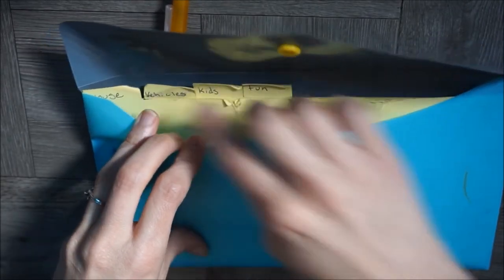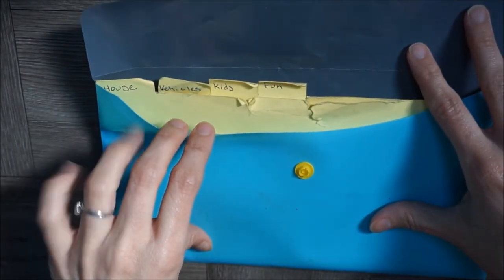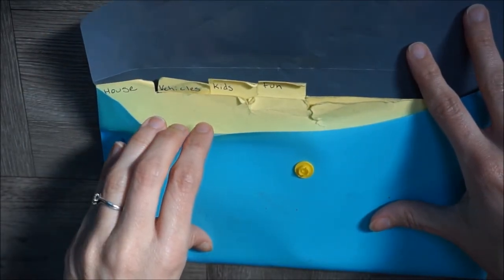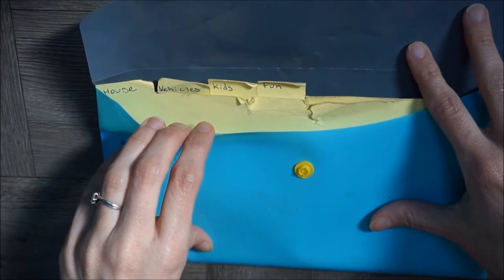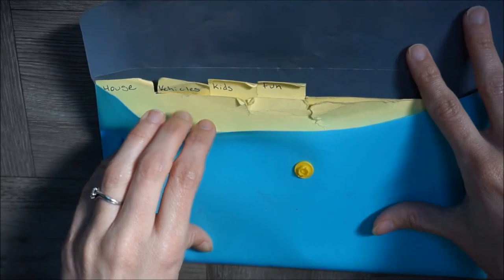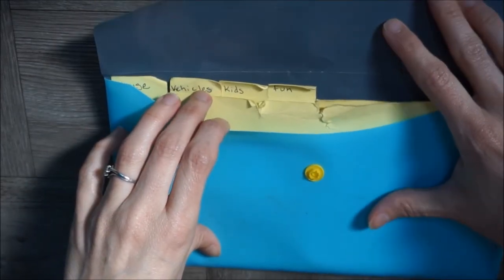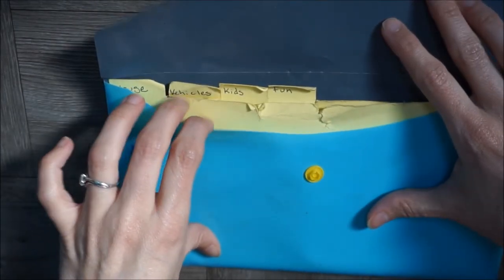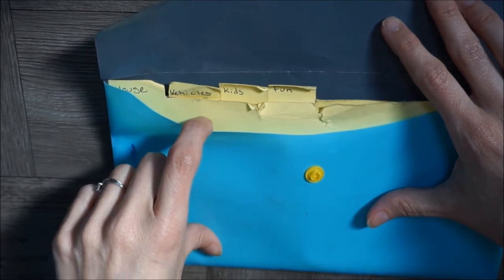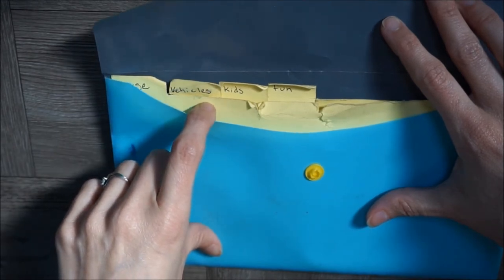So basically what we consider household, that would be any personal care items, as well as household items like cleaning, toilet paper, shampoo, clothing, things like that. Vehicles, basically gas, or any maintenance, oil changes that we can somewhat budget an amount for.